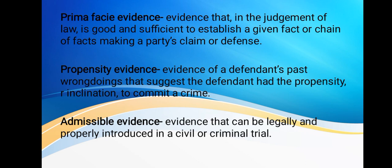Prima facie evidence may be contradicted by other evidence. Propensity evidence is evidence of a defendant's past wrongdoings that suggests the defendant had the propensity to commit a crime — for example, if a person is a serial killer, past crimes may suggest they committed the crime in question. Finally, admissible evidence is evidence that can be legally and properly introduced in a civil or criminal trial. Those are some of the categories of evidence — stay tuned for more, thank you.